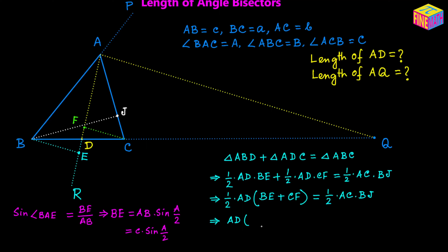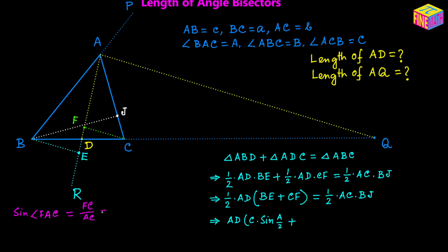In place of BE we write c·sin(A/2). Now for CF: in right triangle AFC, sine of angle FAC equals FC over AC, so FC = AC·sin(FAC). Since AD is the angle bisector, angle FAC = A/2, and AC = b, giving FC = b·sin(A/2). So in place of CF we write b·sin(A/2). We want to calculate the length of AD and AQ.